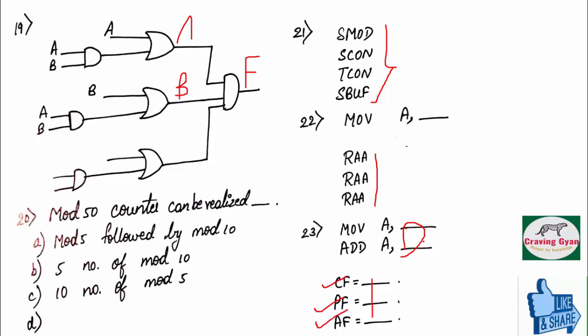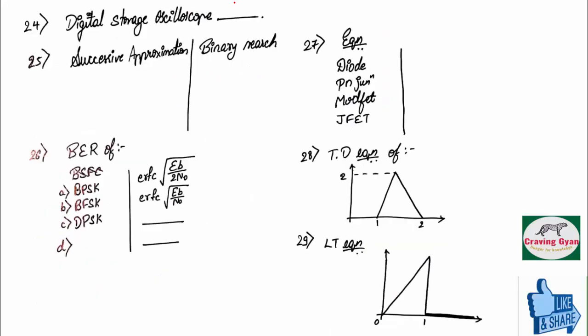I don't remember the exact values over here. If you can able to remember, just put it in the comment box. Twenty-fourth question was based on digital storage oscilloscope. And twenty-fifth question, again, it was on match the following.